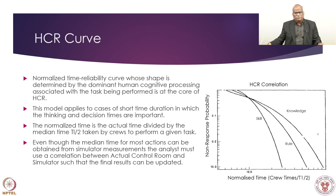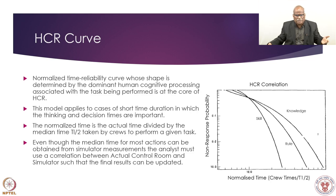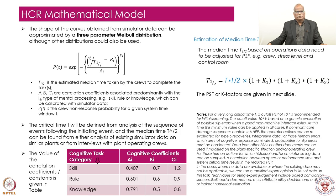From this we need to learn the t median time and t half time. Median time is a term normally used for log-normal distribution. Here we have a sort of Weibull-type distribution, and the character of the HCR model can be characterized by the beta factor because it is a Weibull distribution.